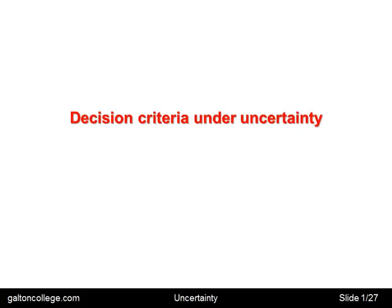In this class we're going to talk about decision criteria under uncertainty. From other classes you'll know that decisions may be made under conditions of risk — that's where we have some idea of the probability of the future outcomes. The risks may be assessed objectively or subjectively.